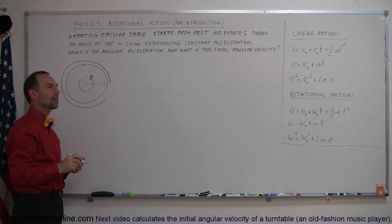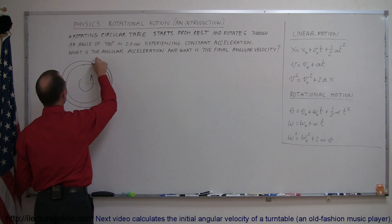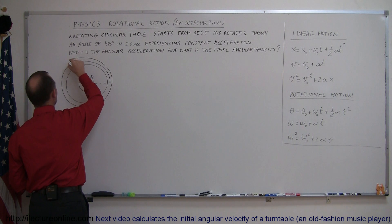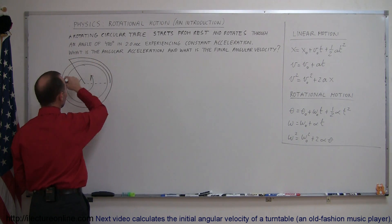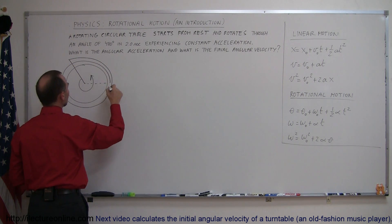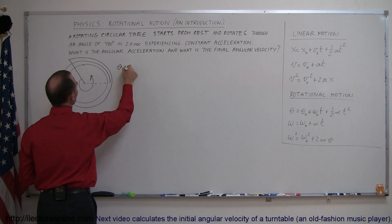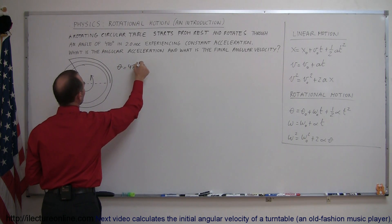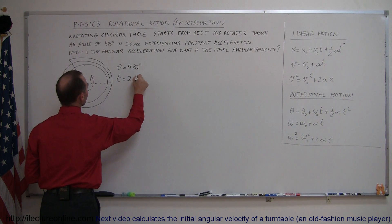That's 360 plus 120, so a total of a little bit more than a full circle. We go once around plus another 120 degrees. So we can say that theta equals 480 degrees, and the time is 2 seconds.